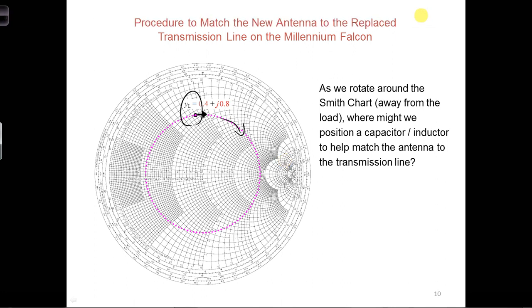As we travel down the transmission line away from the load, this admittance dot rotates around the Smith chart along this purple dotted line in the clockwise direction as shown. Let's pick some particular positions of interest along this purple dotted circle to see if any of those will work.